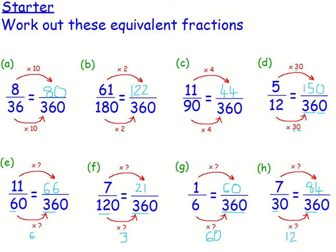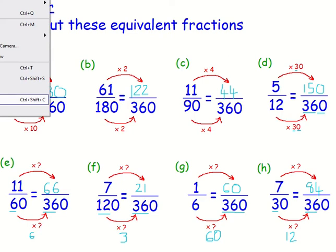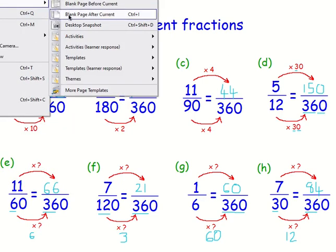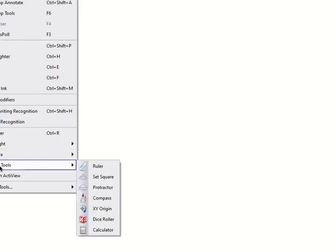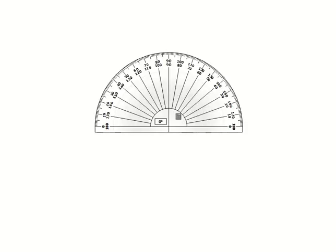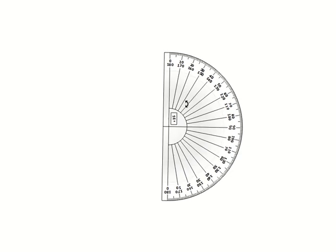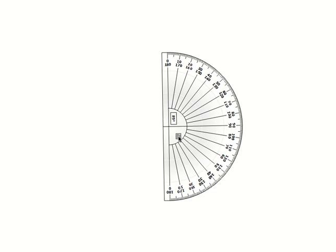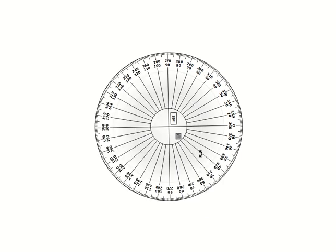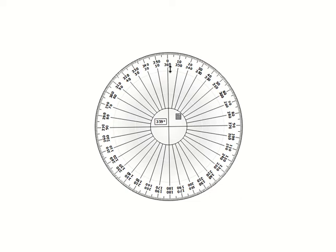You might have noticed I was trying to get an equivalent fraction over 360 each time. Think about what we did in yesterday's lesson — we're going to be using a protractor, and you've probably got a half protractor like this. When we want a full turn, how many degrees is that? 360 degrees in a full turn — and we need that number to be able to draw pie charts today.